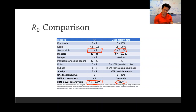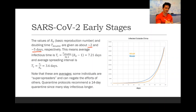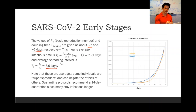Now this 4% fatality rate number has been changing rapidly — it's really hard to know exactly what the fatality rate is because it depends on the quality of medical care and the way that things are being counted. For this disease, the value of R0 has been estimated to be about 2, and the doubling time has been estimated to be about 5 days. When you do the math, this means that the average time spent being infectious is about 7.2 days, and the average interval by which an infectious person will spread the disease is about every 3.6 days. Note that these are averages — some individuals are super spreaders and can negate the effects of others.